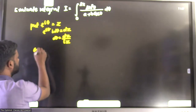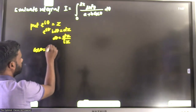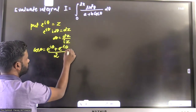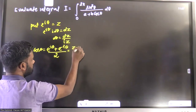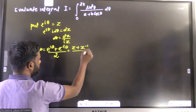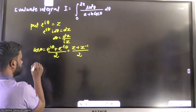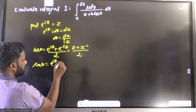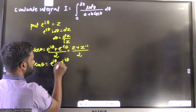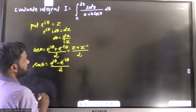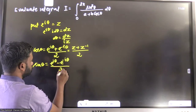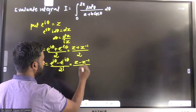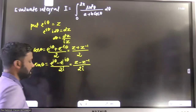We know that cos theta equals e to the power iota theta plus e to the power minus iota theta, divided by two. So cos theta becomes (z + z⁻¹)/2. Similarly, sine theta equals (e^(iθ) − e^(−iθ))/(2i), which becomes (z − z⁻¹)/(2i).